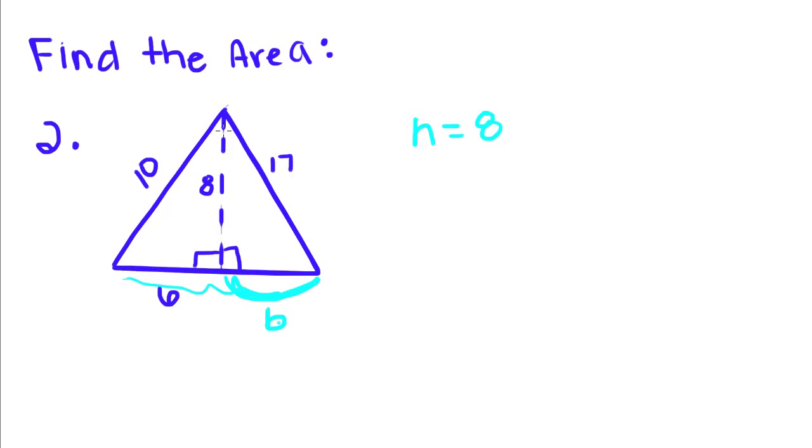So if you look right here, inside this bigger triangle, a right triangle is formed. So we're going to use the Pythagorean theorem on this right triangle to find B. So A squared plus B squared is equal to the hypotenuse squared. Eight squared is 64 plus B squared. And if you plug that into the calculator, you get 17 squared is equal to 289.